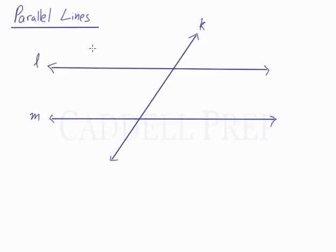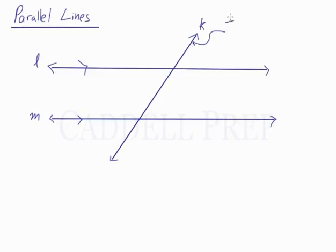In this lesson, we're going to go over angle relationships that result from parallel lines being cut by a transversal. We'll start with line L and line M being parallel, which is usually denoted with a symbol on the two lines. They're parallel, meaning they never intersect and remain the same distance apart from each other. The line that cuts through them is known as the transversal.